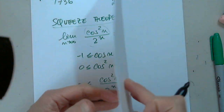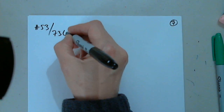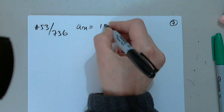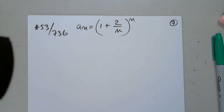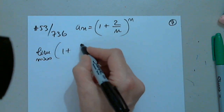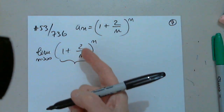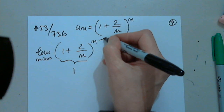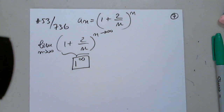Let's look at 53 on the same page 736. We have a sub n equals 1 plus 2 over n raised to the power n. Let's look at the limit as n approaches infinity of 1 plus 2 over n raised to n. This piece approaches 1 and the exponent approaches infinity, so 1 to infinity is another indeterminate case that we cannot conclude directly — we have to work for this one.